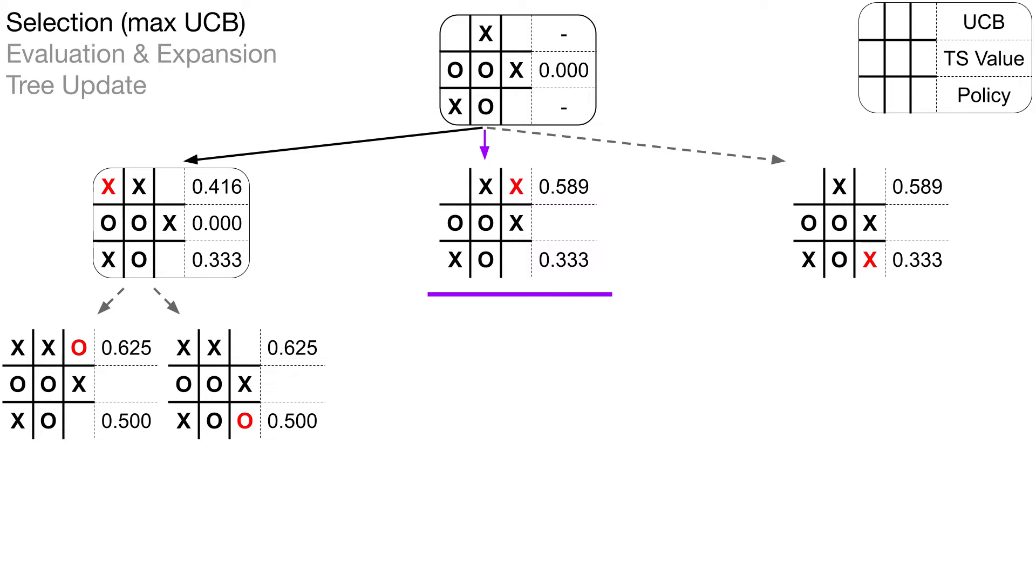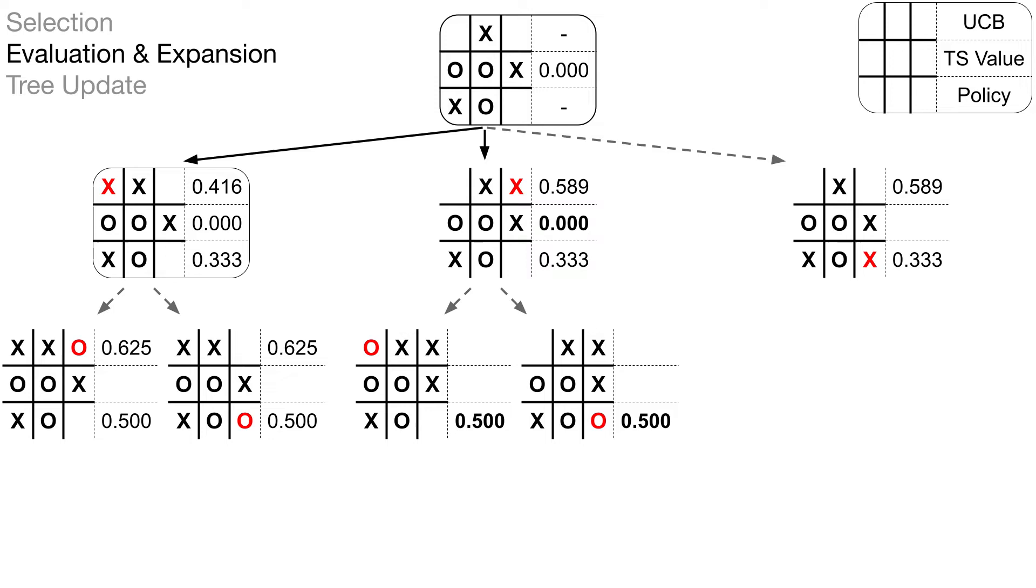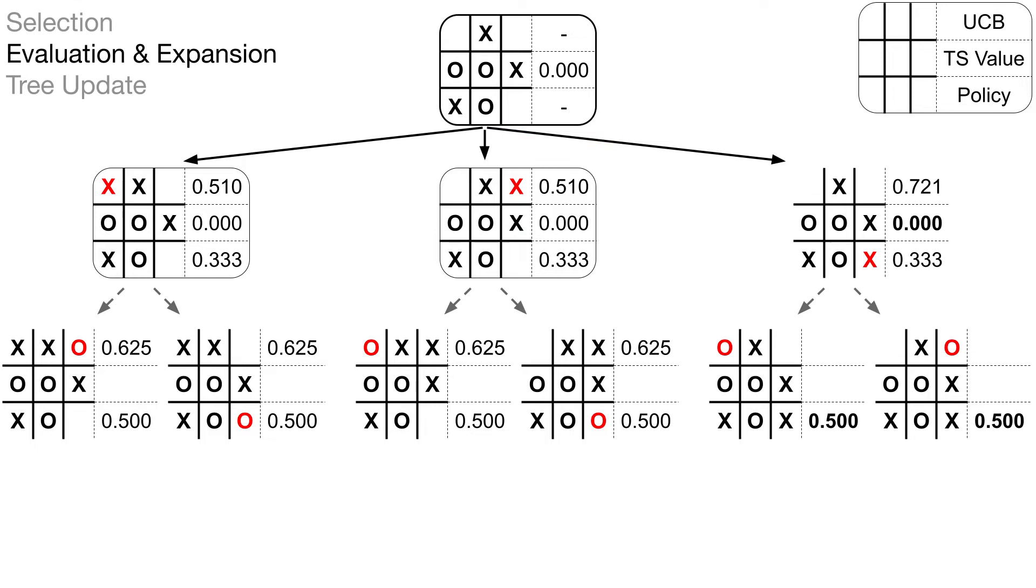The Tree Update step recalculates the Upper Confidence Bounds. First, we add one to the visit count for our root node and the node we expanded. The TreeSearch value ends up not changing because both the value and the reward are zero. As a result of increasing visit counts, the node we just selected and expanded has a lower UCB than its two siblings. That concludes one iteration of TreeSearch, so we start again. The starting node has two children tied for maximum UCB, so we break the tie by selecting the middle node. The Evaluation and Expansion step is very similar to the first iteration. It uses the policy to pencil in two more nodes for the legal actions, both equally likely. During Tree Update, we add one to the visit counts of the parent node and the node we just visited and recalculate the Upper Confidence Bounds.